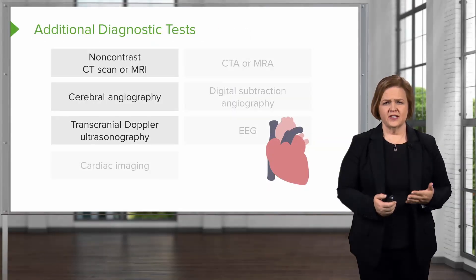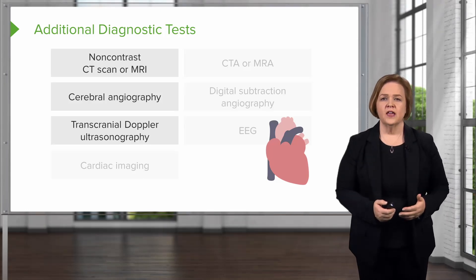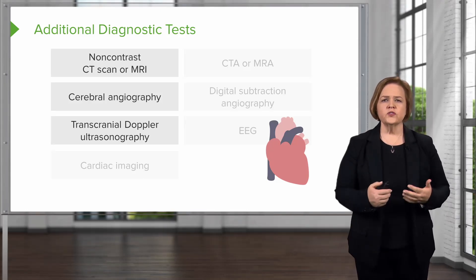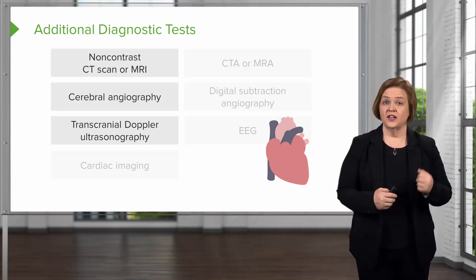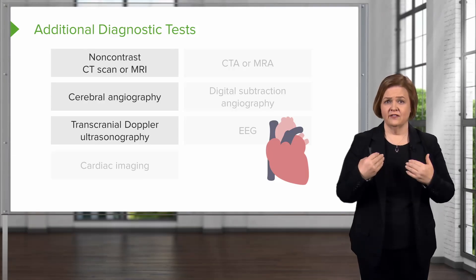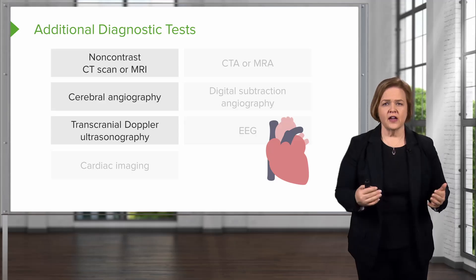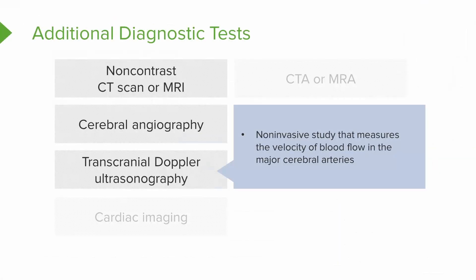The third test is a transcranial Doppler or TCD — that's ultrasonography, and it's a non-invasive study, which is really good since cerebral angiography is very invasive. The transcranial Doppler measures the velocity of blood flow in the major cerebral arteries. It's a bit faster than the other imaging options but can also give us some really helpful information.